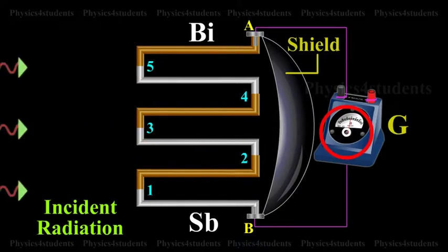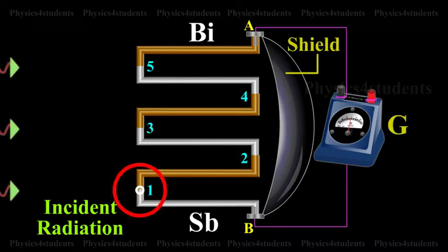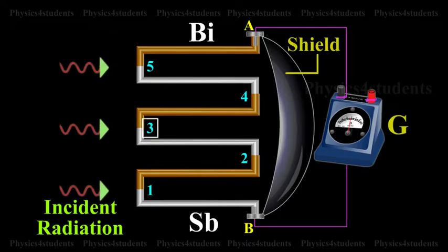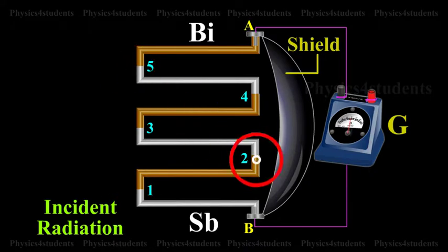The ends are connected to a galvanometer G. One set of junctions, 1, 3, 5, is blackened to absorb completely the thermal radiation falling on it.